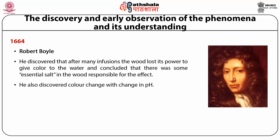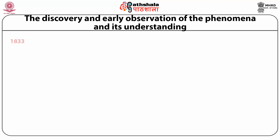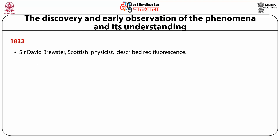Boyle also discovered the colour change with change in pH: addition of acid abolished the colour, and addition of alkali caused the colour to reappear. In 1833, Sir David Brewster, a Scottish physicist, described red fluorescence — when a beam of light passed through an alcohol solution of green leaves, a red beam could be observed from the side, which may be due to chlorophyll fluorescence. He considered the effect due to dispersion.